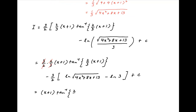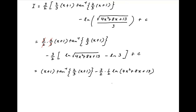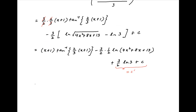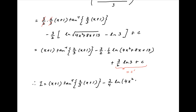This simplifies to (x plus 1) times tan inverse of (2/3)(x plus 1) minus (3/2) times (1/2) ln of (4x squared plus 8x plus 13) plus (3/2) ln 3, plus the constant of integration. Since (3/2) ln 3 is also a constant, absorbing it into c gives c dash, and therefore the final answer is (x plus 1) tan inverse of (2/3)(x plus 1) minus (3/4) ln(4x squared plus 8x plus 13) plus c dash.